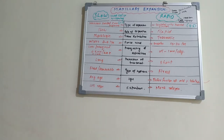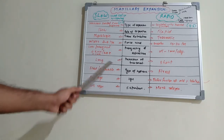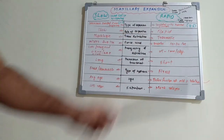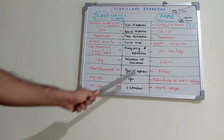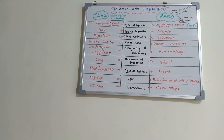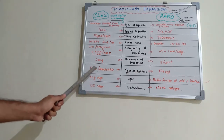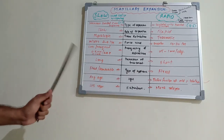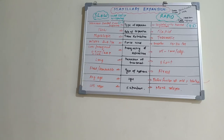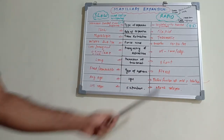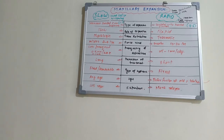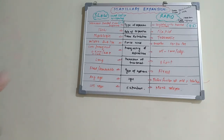Regarding the duration of treatment: since slow expansion is gradual, it takes a longer duration, while rapid expansion is completed in a shorter span. For the type of appliances used, in slow expansion both fixed and removable appliances can be used. In rapid expansion, mostly fixed appliances are used.